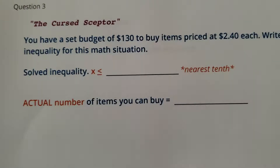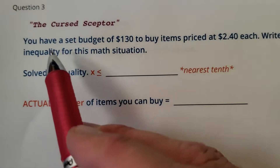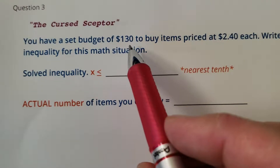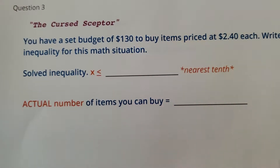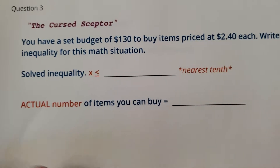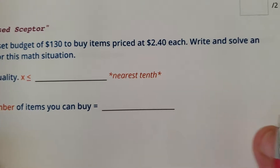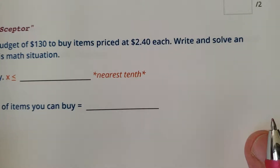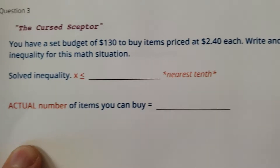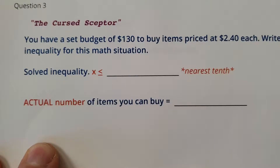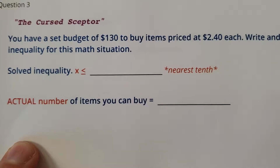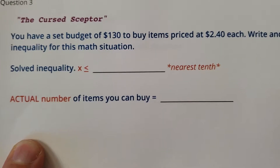What's up, students? We got the cursed scepter. Here we go. You have a set budget of $130 to buy items priced at $2.40 each. Write and solve an inequality for this math situation. Okay, here we go.